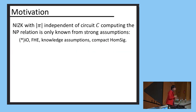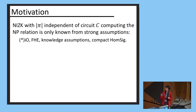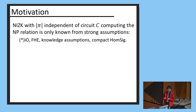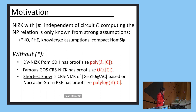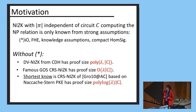Let me tell you about the motivation a little bit more. When we consider NIZKs with proof size which are independent of the circuit size C computing this NP relation, we actually only know them from rather strong assumptions, such as IO, FHE, knowledge assumptions, and so on. The question is: if we don't really want to use these kinds of assumptions, then what do we get? Without relying on these assumptions, we actually don't have a lot of really compact proofs.